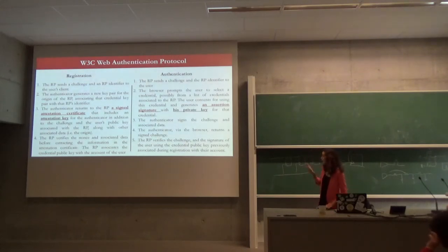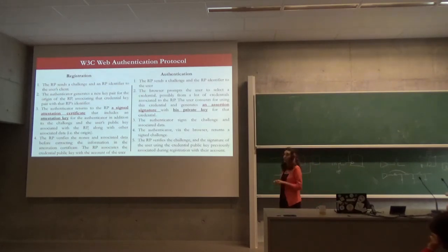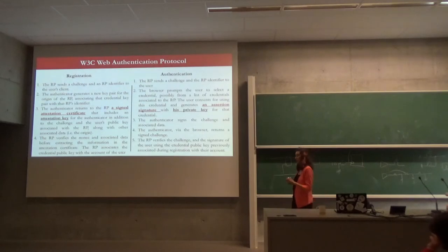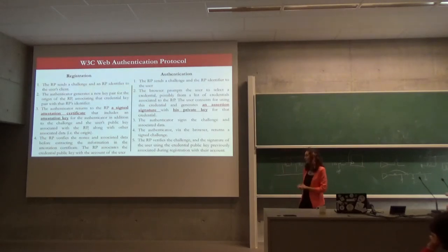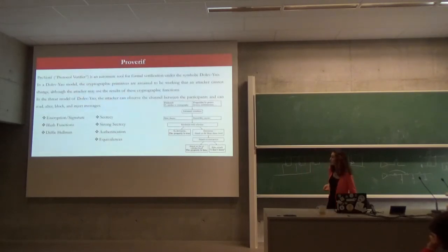For the authentication, which is again a challenge-response, the user will only send the assertion signature with his credential public key — which is the public key generated earlier during registration and associated with the relying party. The relying party will verify the challenge and the signature, and let the user authenticate himself.